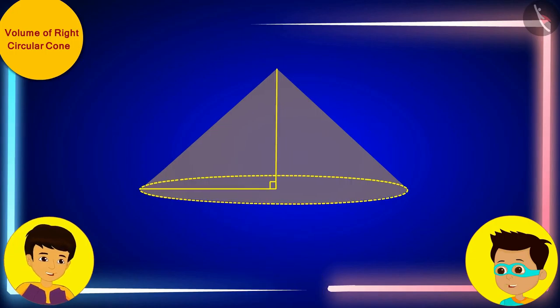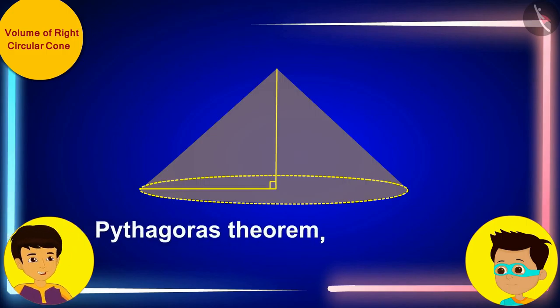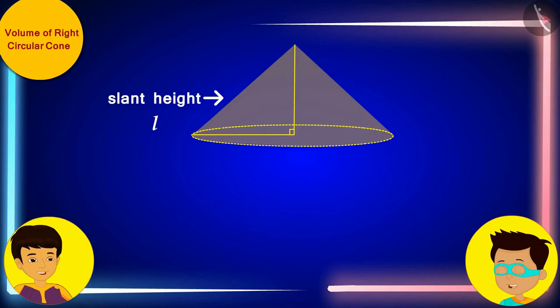Don't you remember, Manas, that according to the Pythagoras theorem, the square of the slant height, L, of any right circular cone is equal to the sum of the squares of the radius of its base, r, and the height, h.